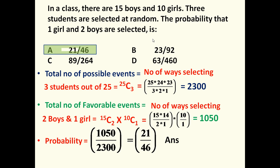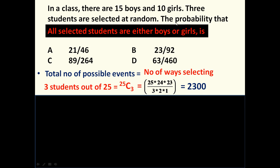Now if we slightly modify the same problem: in a class there are 15 boys and 10 girls, 3 students are selected at random. The probability that all selected students are either boys or girls — what will be the probability? Again, the total number of possible events equals 25C3, which is 25 × 24 × 23 divided by 3 × 2 × 1, equal to 2300.